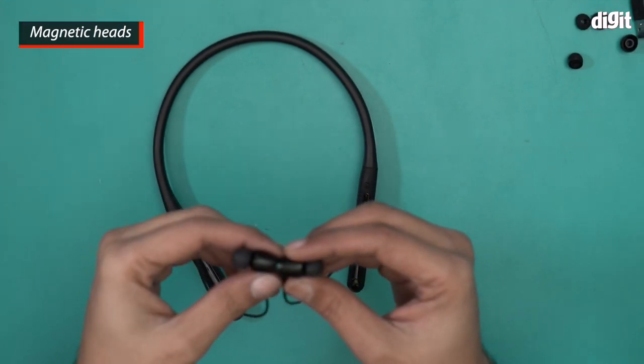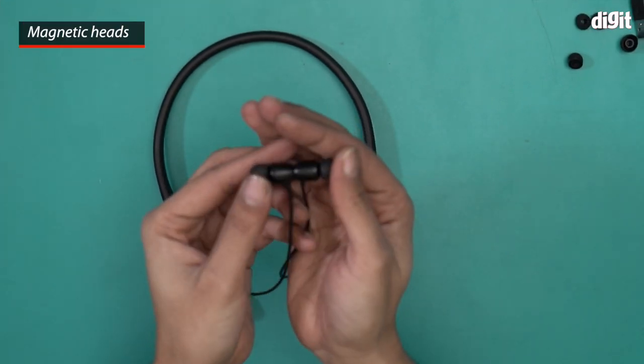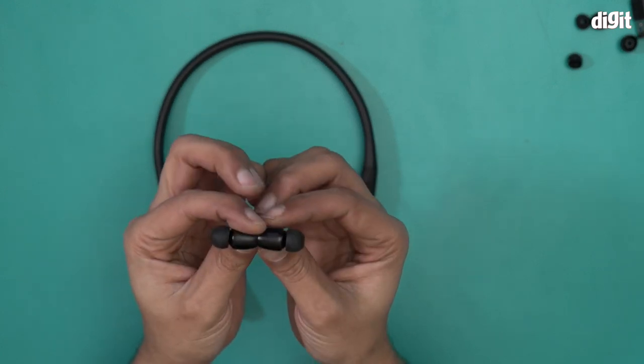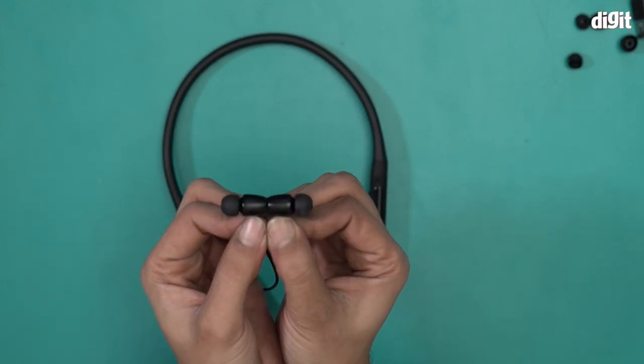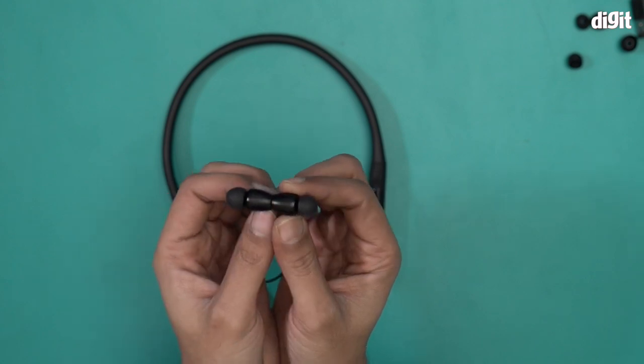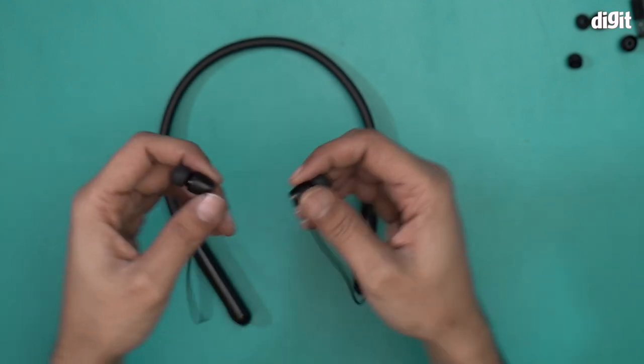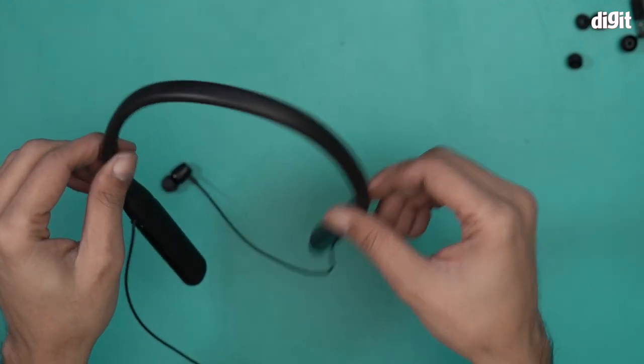Now this is a great addition. First of all, notice that the nozzles have a slight angle to it, but the most important thing is that these are magnetic, which means that when you are wearing this neckband around your neck, these magnets will prevent this neckband from falling off. That's a great touch.